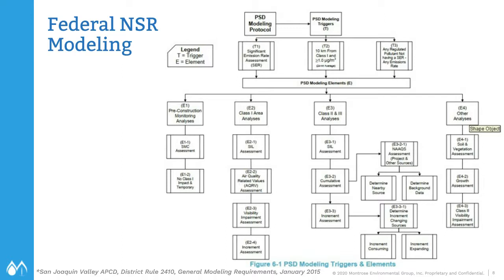Suppose we have a new line at a major source with potential emissions above the significant emission rate, or SER. If the facility did not want to take a PSD avoidance limit, PSD modeling would be required. First, we would conduct a modeling assessment to determine if pre-construction monitoring would be required. Then, if the facility is located near a federal Class I area — pristine or more protected areas like national parks or national wilderness areas — we must conduct a Class I area analysis, which may involve several steps and even communications with the federal land manager.